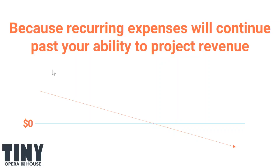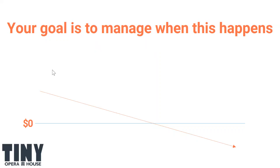That running-to-zero point tells you how many months you have left if no new money comes in beyond what's already specifically iterated in the cash flow. You're always just trying to keep that point — where it runs to zero — as far into the future as possible.